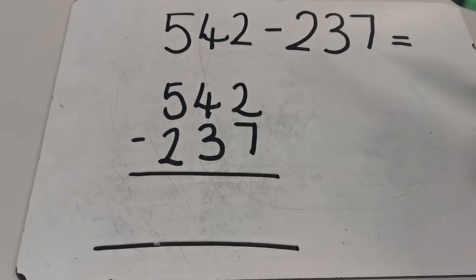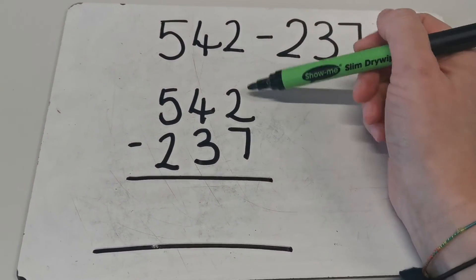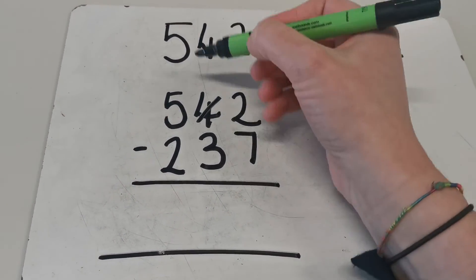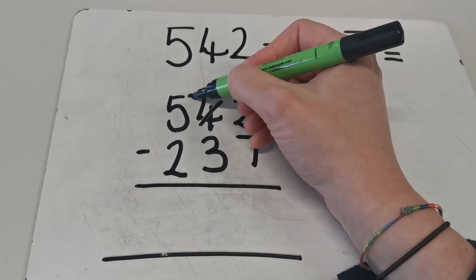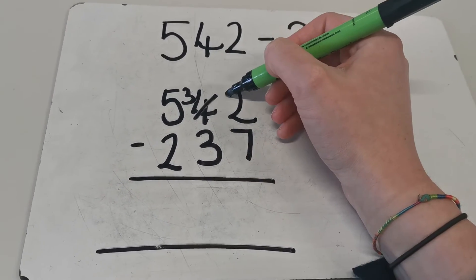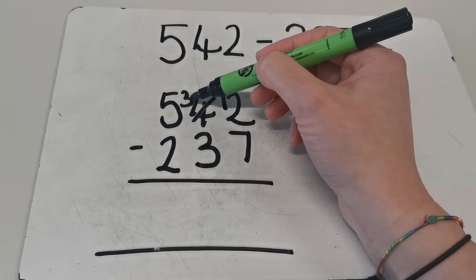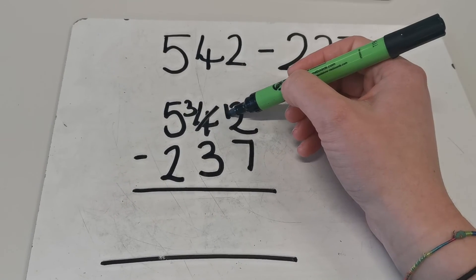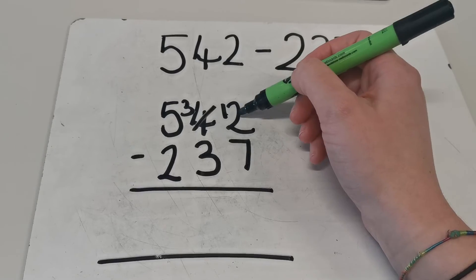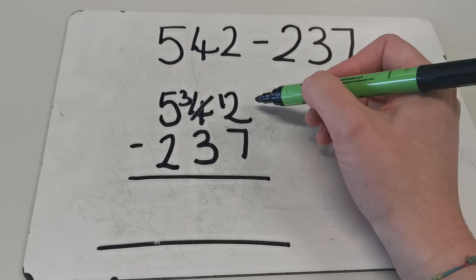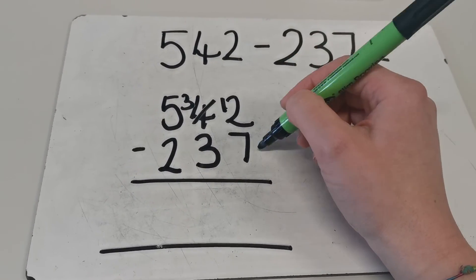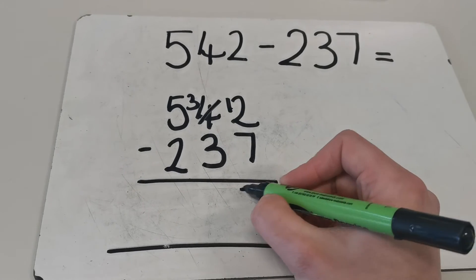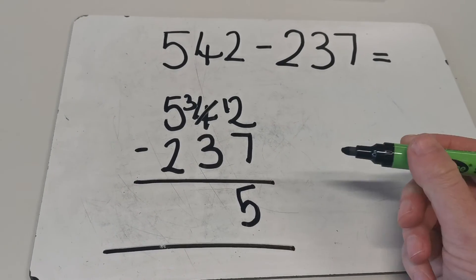Now I'm going to show you the written method again. I can't subtract seven away from two, so what I need to do is I need to exchange one ten for ten ones. So I'm going to say I've now got three tens because I got one less ten, and I'm going to add my ten ones to my two ones and now I've got twelve ones. So I can subtract seven from my twelve, which is five. And if you're unsure, please count on your fingers or use resources.